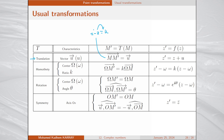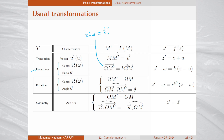Secondly, consider a homothety with center Ω (with affix ω) and ratio k. This is characterized by the vectorial relation ΩM prime = k·ΩM. In terms of affixes: z prime minus ω = k·(z minus ω), which gives the complex representation of homothety.